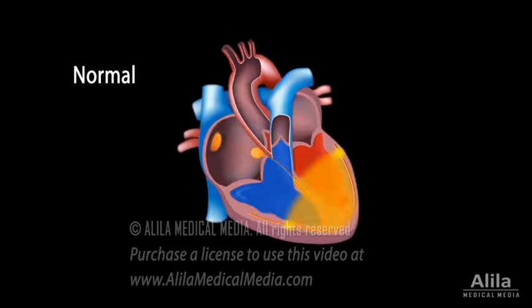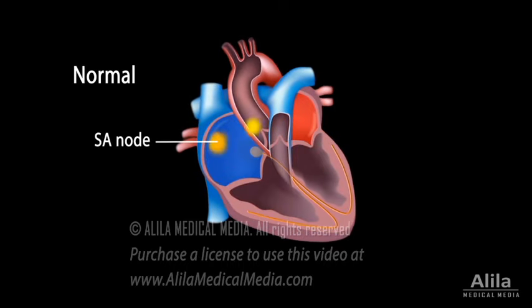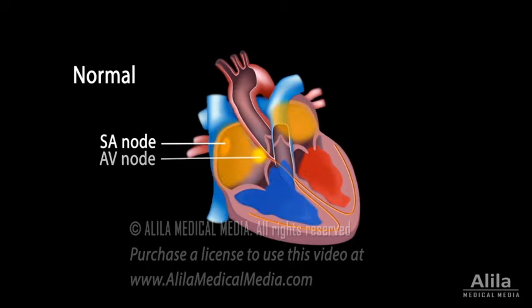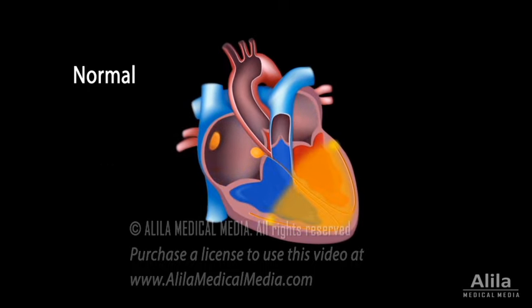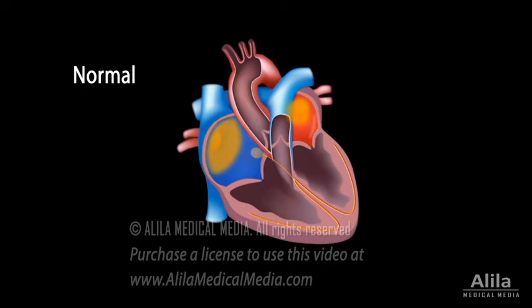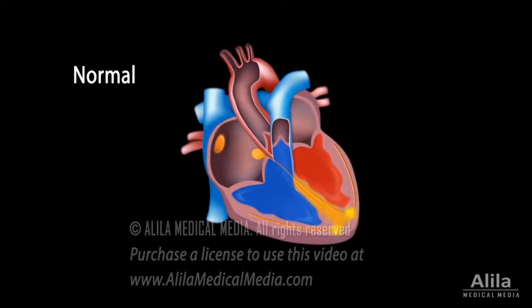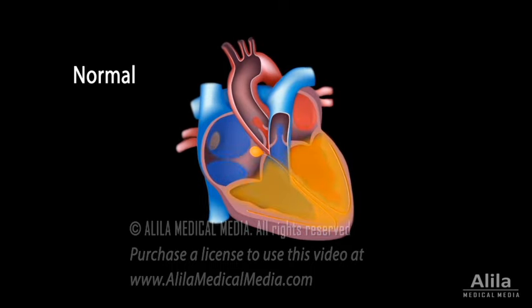In normal conduction, electrical signals are initiated in the SA node and travel throughout the atria to reach the AV node. The AV node is the gateway to the ventricles. It delays the passage of electrical impulses to the ventricles to ensure that the atria have ejected all the blood into the ventricles before the ventricles contract. This refractory property of the AV node is essential in limiting electrical activities that reach the ventricles.